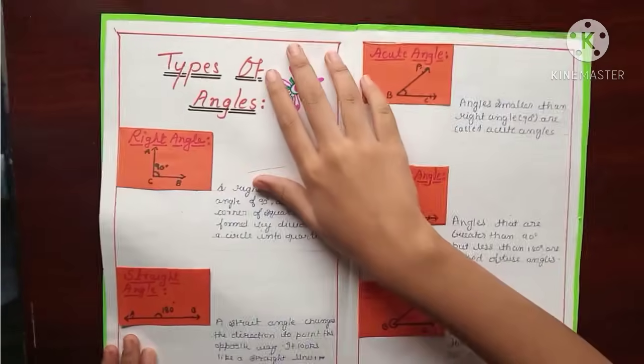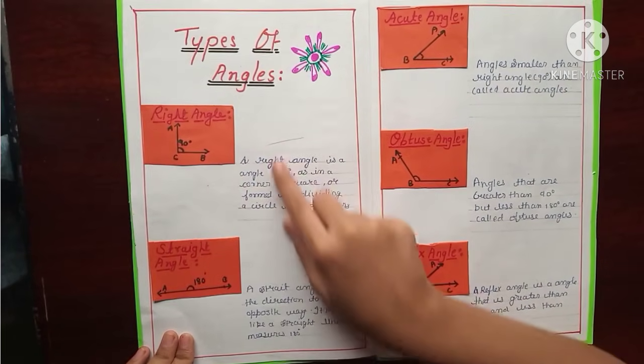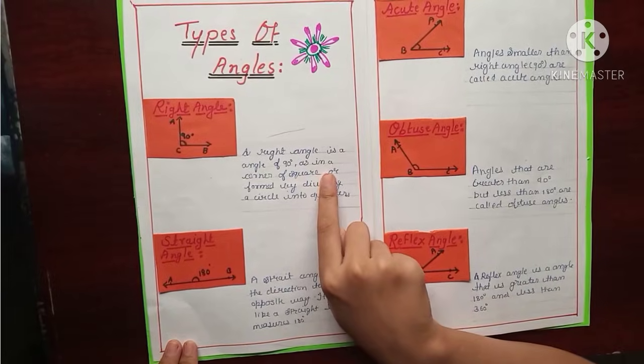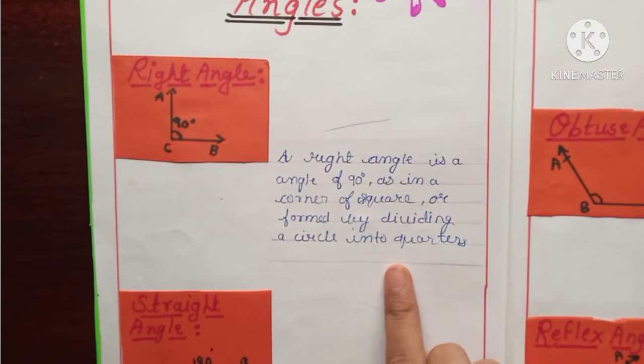And here is the types of angles. First is right angle. And here is the definition of right angle. A right angle is an angle of 90 degree as in a corner of a square or formed by dividing a circle into quarters.